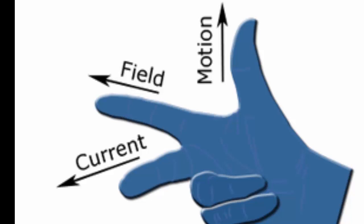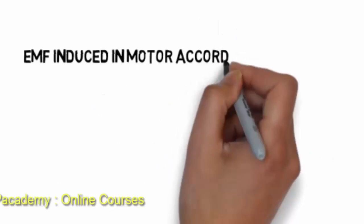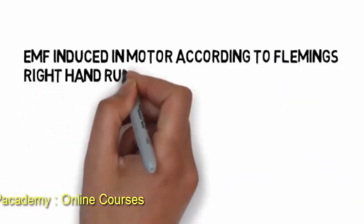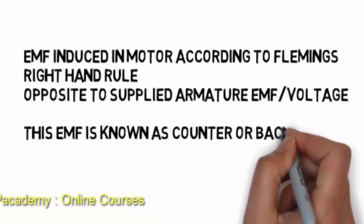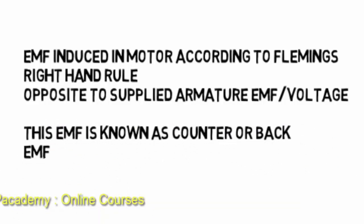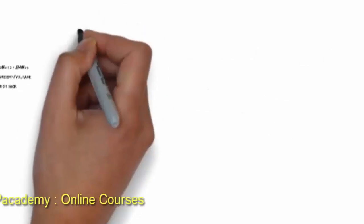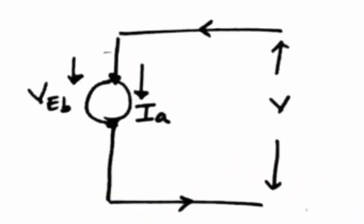EMF will also be induced in a motor according to the right hand rule. Although it is a motor, the generator principle acts on it, because each conductor carries current and motion due to the motor principle, and there is a field induced by the field magnets. So some EMF is induced even in motors, and this EMF is known as back EMF. This back EMF is always opposite to the supply voltage — it opposes the voltage which produces the motion.